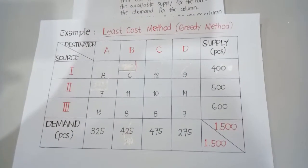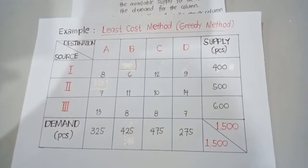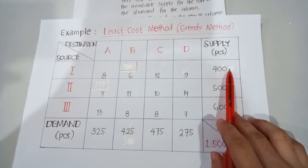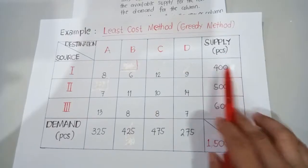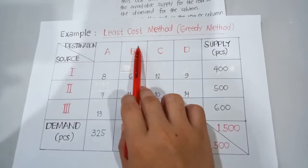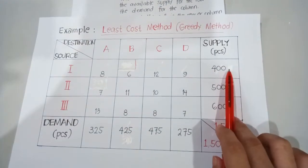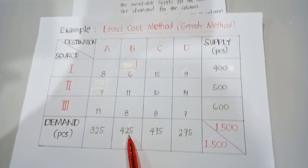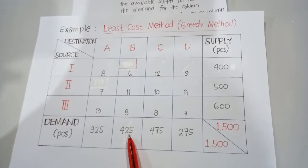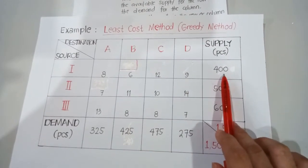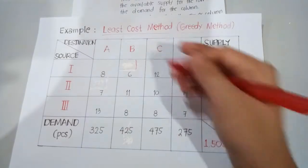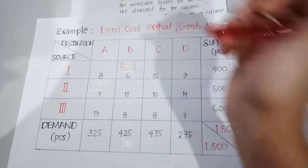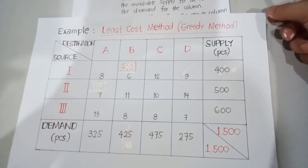In allocating, we need to match the quantity of our demand and the quantity of our supply. The supply with respect to source 1, destination B, is 400 pieces, and the demand is 425. We allocate the one which has the least value — the supply of 400. Therefore, I will be allocating 400 pieces here. That is step number one.